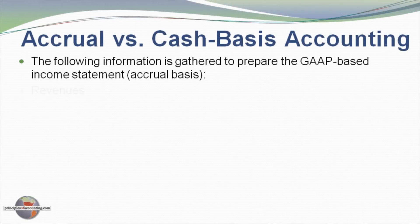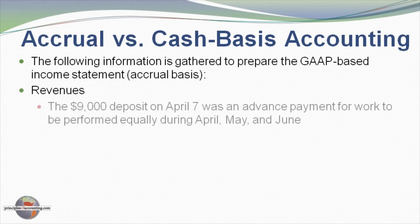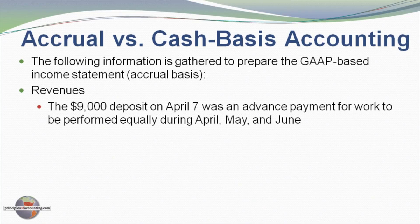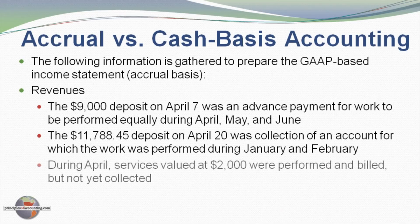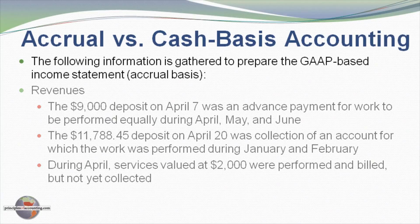There is additional information with certain revenue adjustments. The $9,000 deposit made on April 7th was an advance payment for work to be performed in April, May, and June. The $11,788 deposit on April 20th represents a collection of an account for which work was previously performed in January and February. Also, during April, services valued at $2,000 were performed but have not yet been billed to the client.